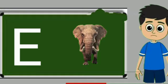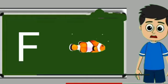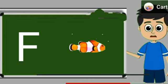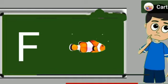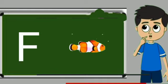E for elephant. Elephant means hathi. F for fish. Fish means machli.